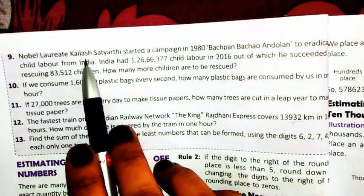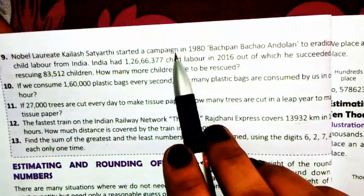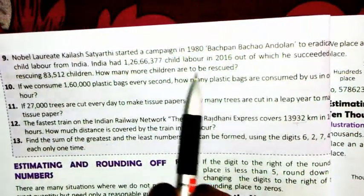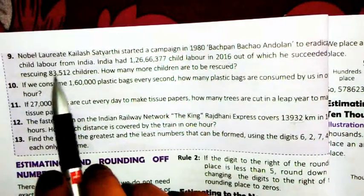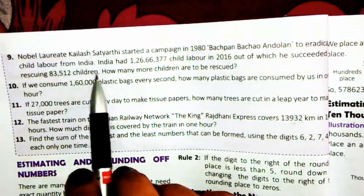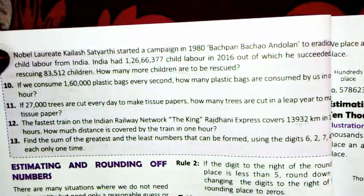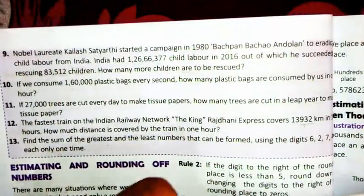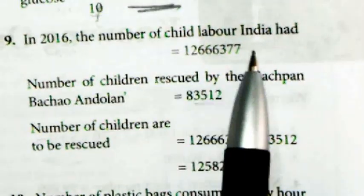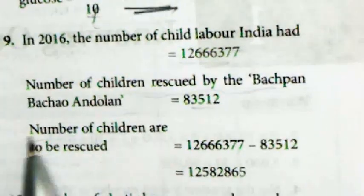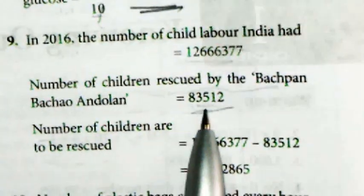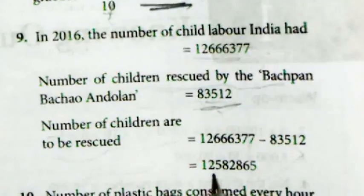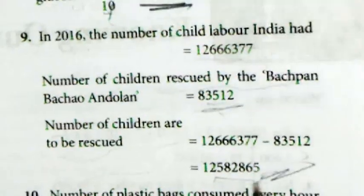Next sum: Nobel laureate Kailash Satyarthi started Bachpan Bachao Andolan in 1980 to rescue children from child labor. In 2016, India had a certain number of child laborers, of which 83,512 children were rescued. How many more children can be rescued? Total child laborers minus 83,512 rescued gives the remaining number yet to be rescued.